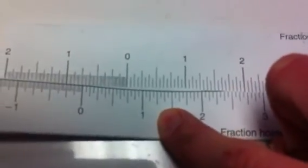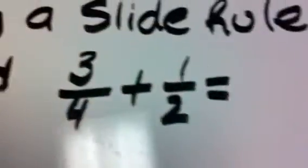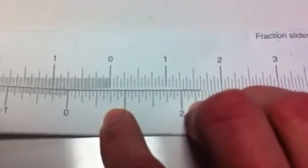That zero went to 3 fourths on the fraction holder. Next, we're going to look back at the problem. It's 3 fourths plus 1 half. Okay, the zero is at 3 fourths,